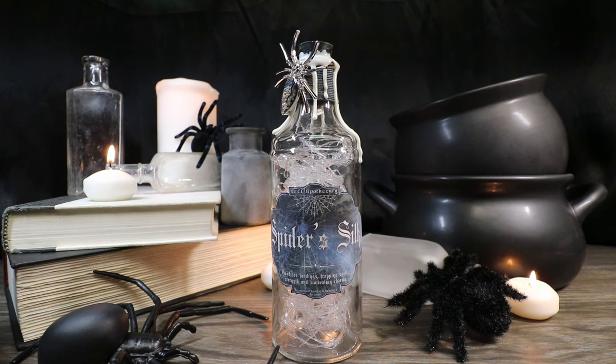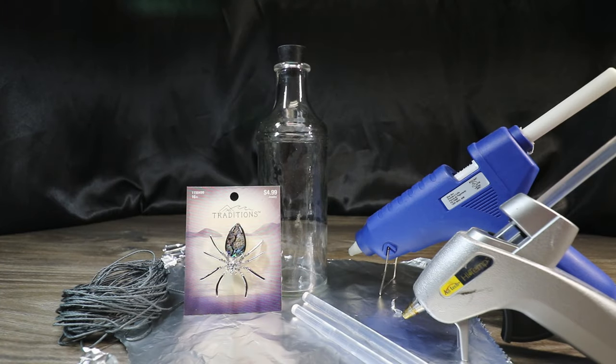Today I'm going to show you how to create spider silk. The things you'll need to create our spider silk is a glass bottle. I replaced the cork on this with a black rubber cork, and that was pretty much just for aesthetic. It doesn't matter what kind of cork you have on here.